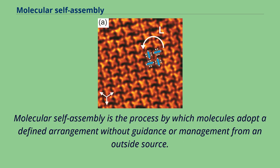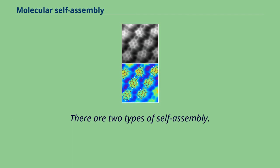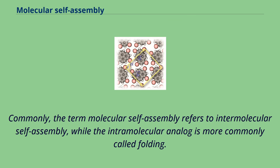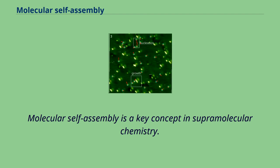Molecular self-assembly is the process by which molecules adopt a defined arrangement without guidance or management from an outside source. There are two types of self-assembly: intramolecular self-assembly and intermolecular self-assembly. Commonly, the term molecular self-assembly refers to intermolecular self-assembly, while the intramolecular analog is more commonly called folding.